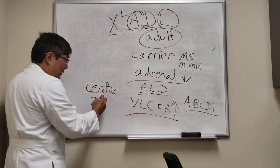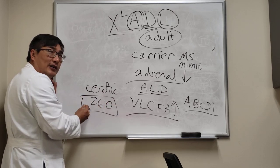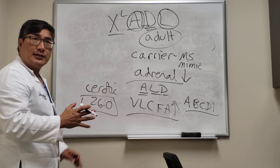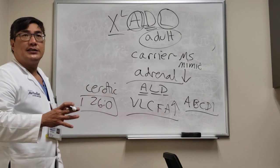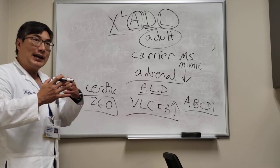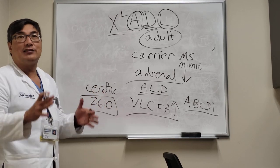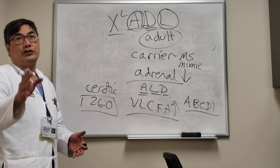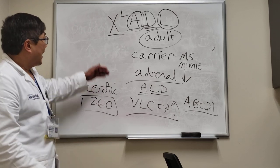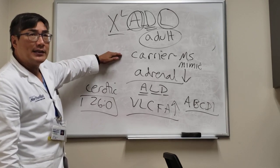You measure very long chain carbons such as C26:0. There is no cure, but there are treatments. One of the most famous is giving a different oil to prevent the peroxisome from producing very long chain fatty acids — this was the basis of the movie Lorenzo's Oil, which you can watch or look up.